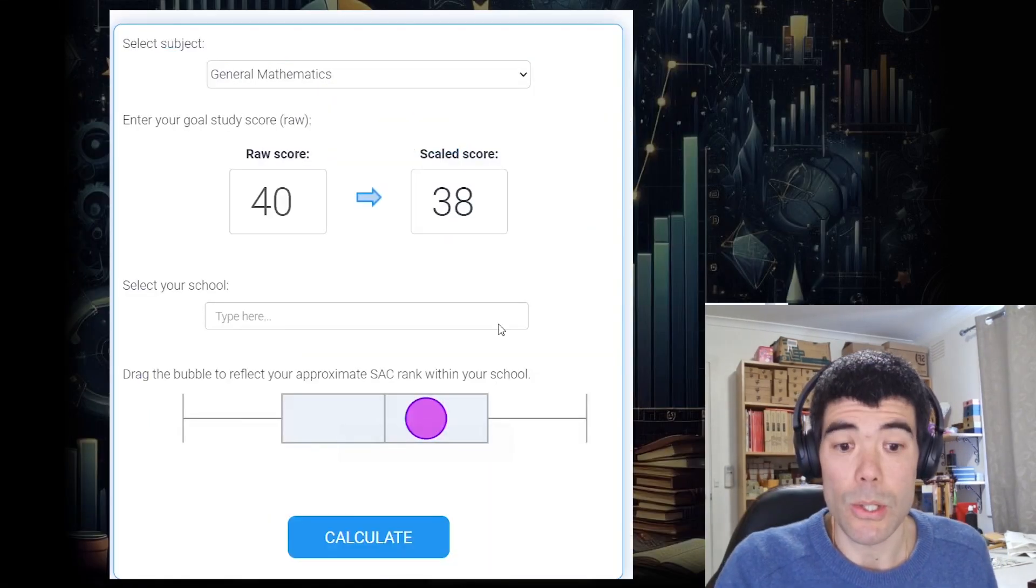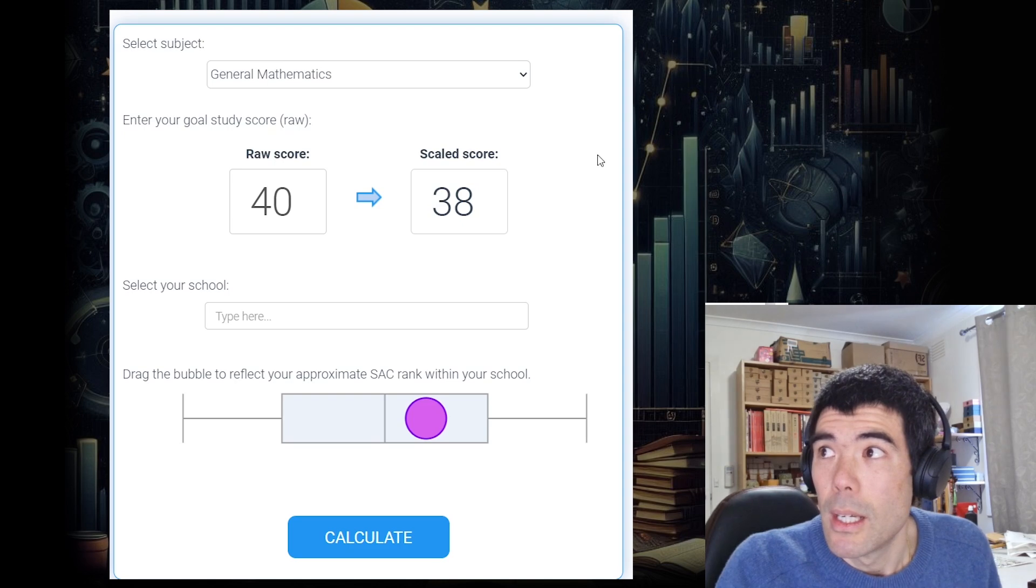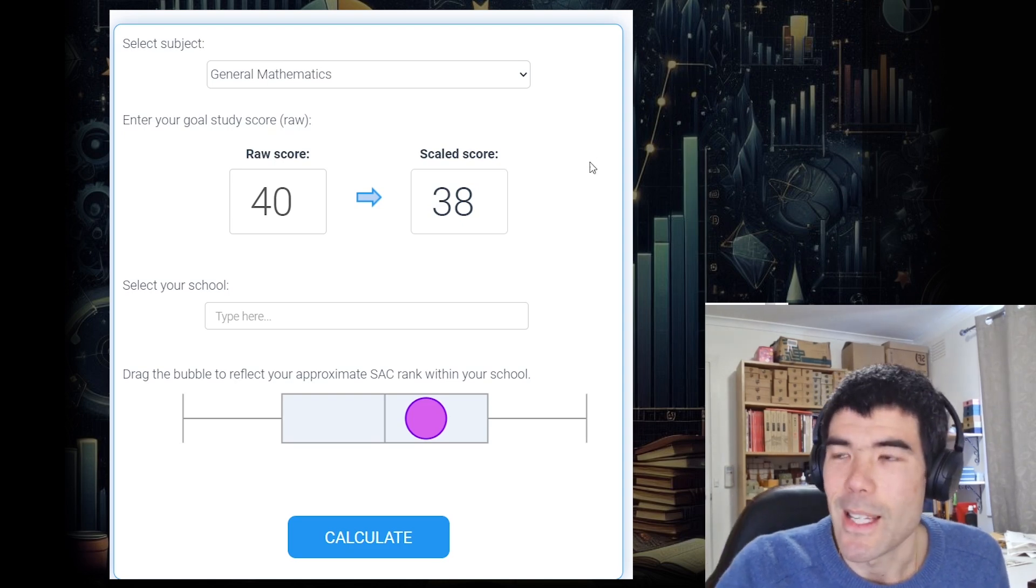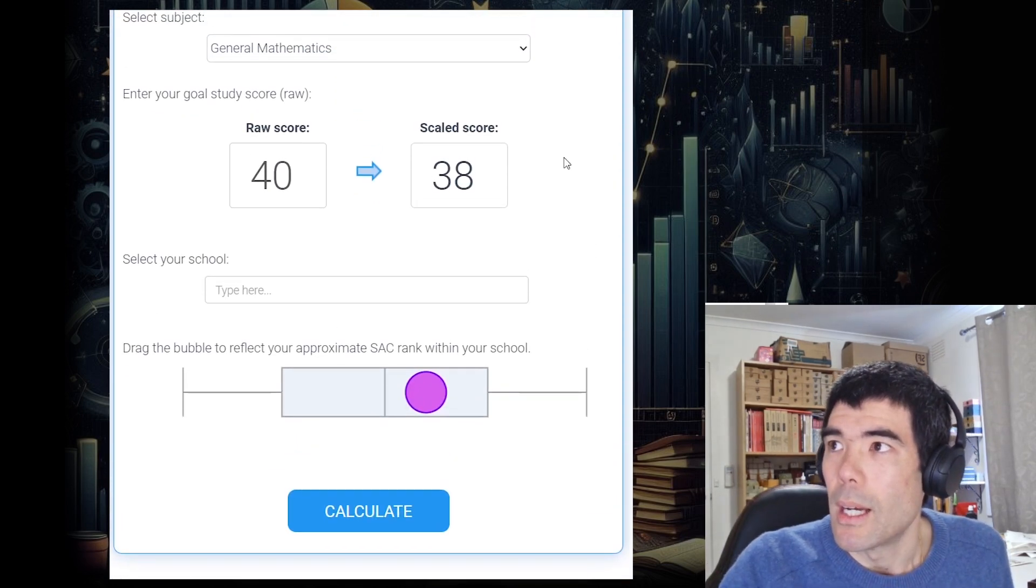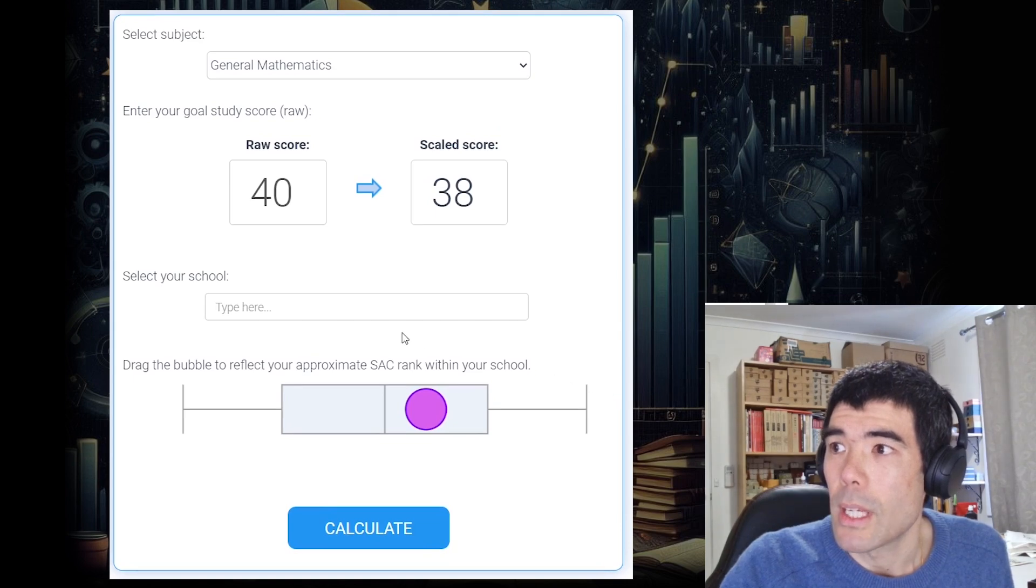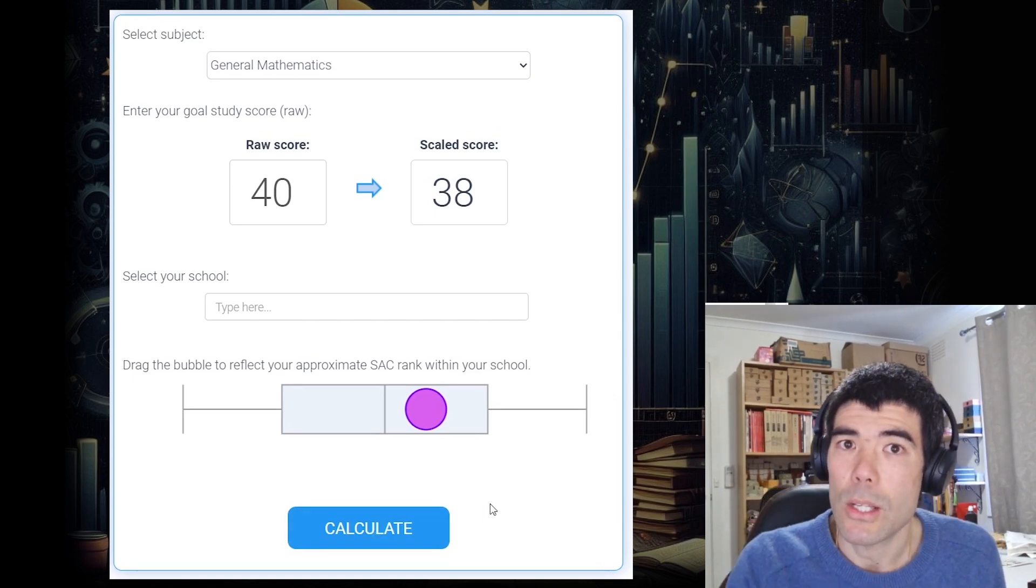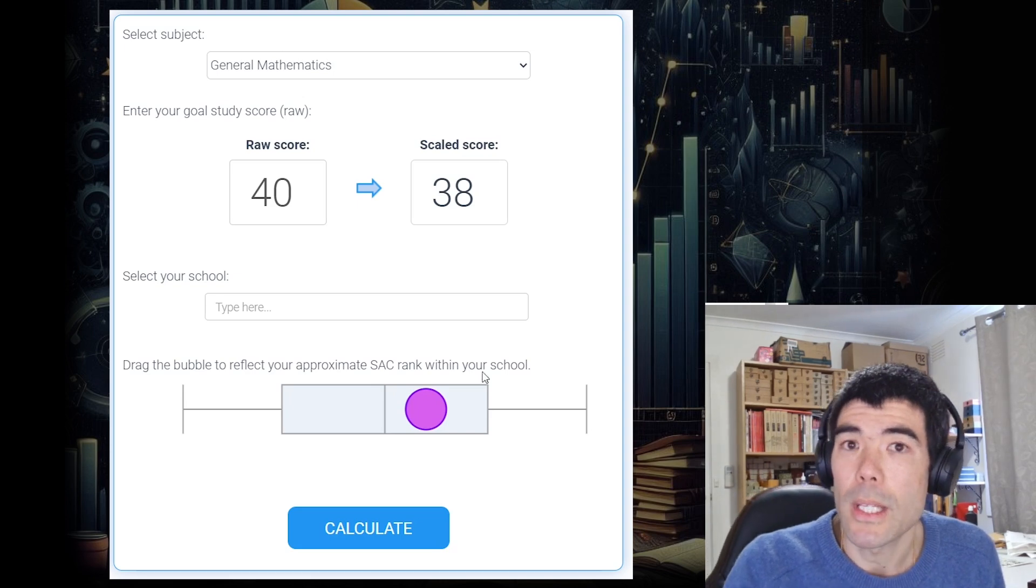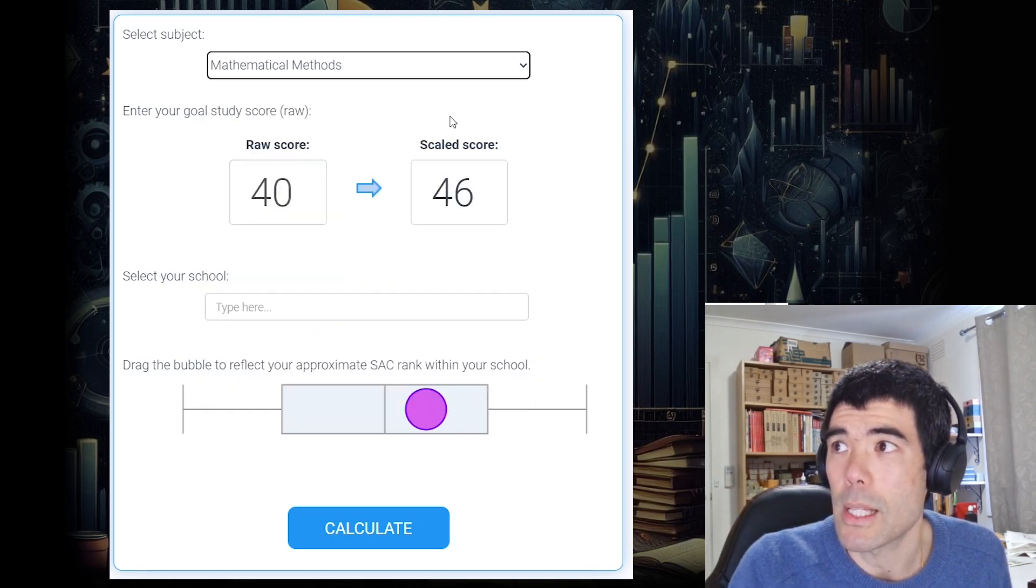Let me show you a study score calculator that I built a few years ago, just got around to updating it with the latest data. But what it does is it attempts to take your SAC rank and show how that SAC score may be moderated based on the exam scores of students within your school. So let's choose a subject, say, maths methods.